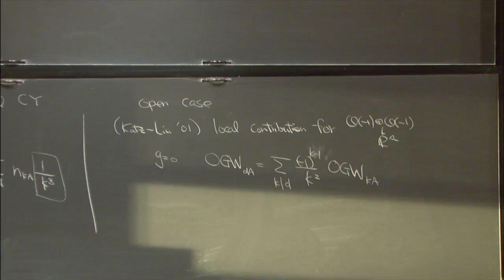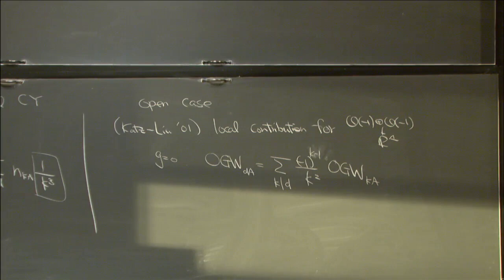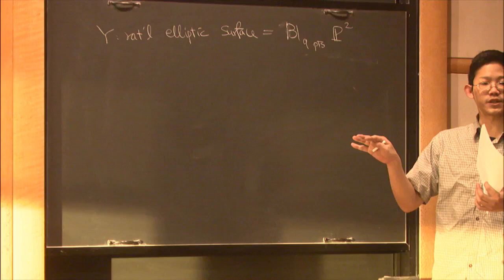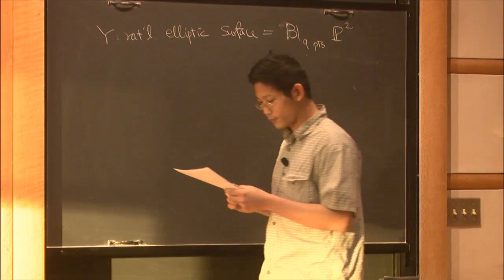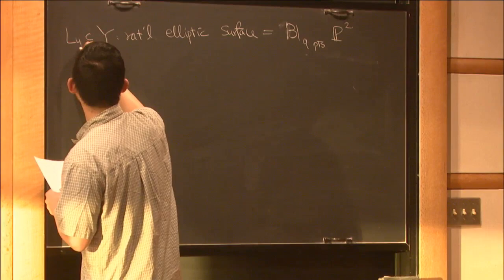Our goal today is to study this conjecture in the following setting. We take a rational surface S, roughly the blow-up at nine points of P². This has an elliptic fibration structure — if you take a pencil of cubics and blow up at the nine base points, the last blow-up at the base point gives a section. So this has an elliptic fibration structure with a section over P¹.